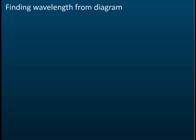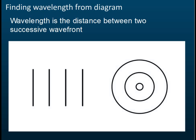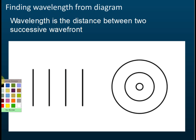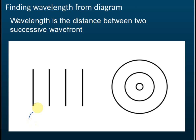This is how to find wavelength from a wavefront diagram. The lines in the diagram represent wavefronts, and you should know that the wavefront is actually representing a wave. Usually the wavefronts represent either the crest or the trough.